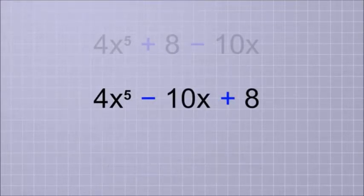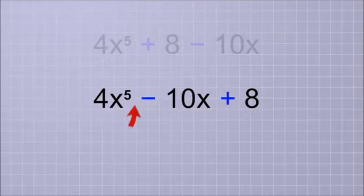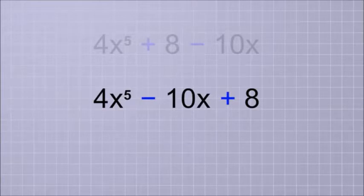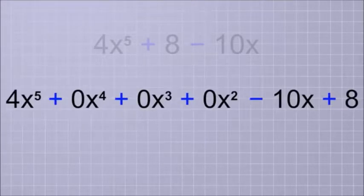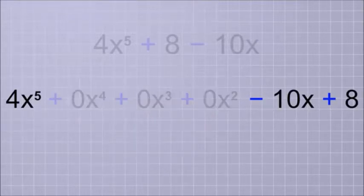By the way, it's totally fine for a polynomial to have missing terms like that. And it's sometimes helpful to think of those missing terms as just having coefficients that are all zeros. If the coefficient of a term is zero, then the whole term has a value of zero. So it wouldn't affect the polynomial at all.